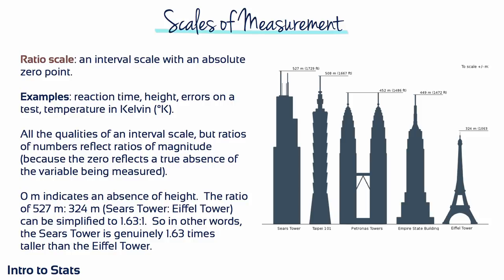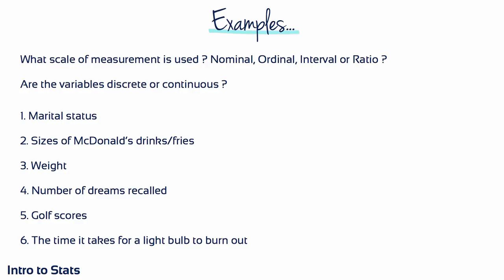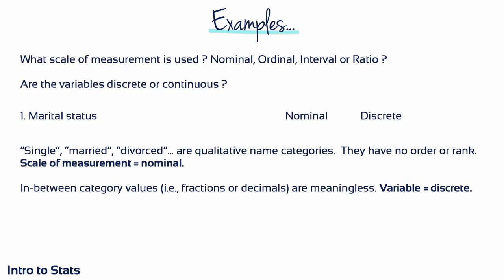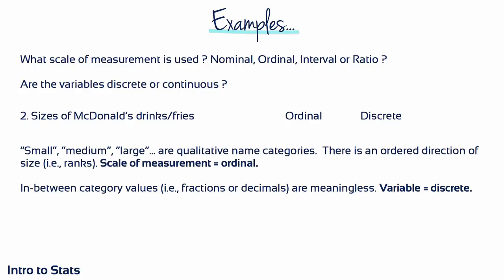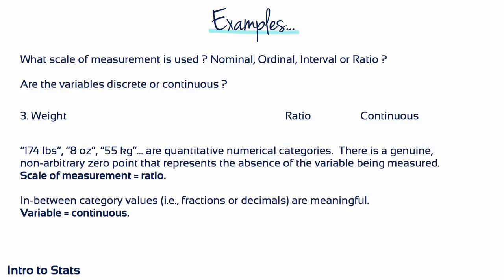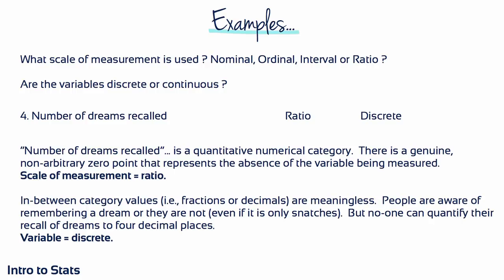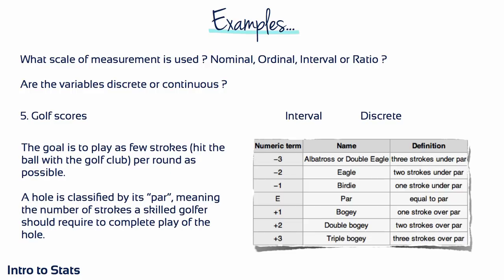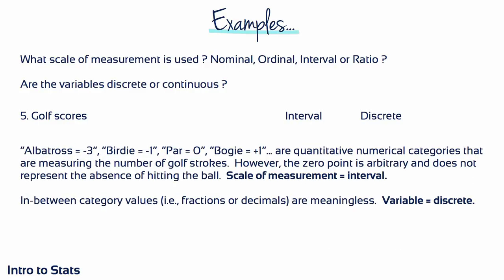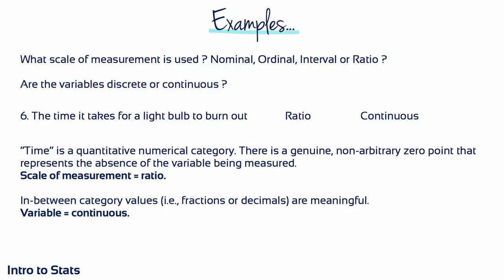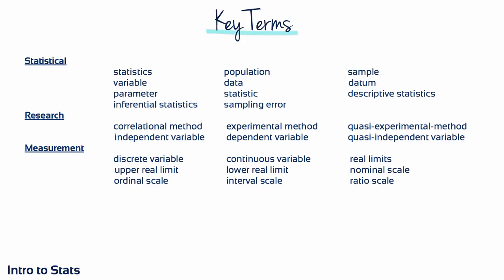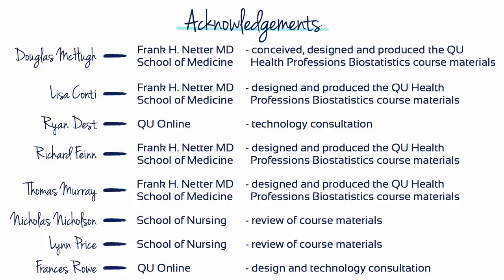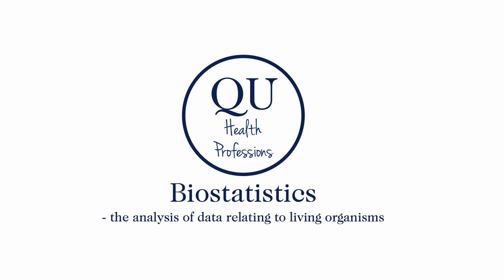For biostatistics, scales of measurement are important because they influence the kind of statistics that can and cannot be used. Let's go through some examples and practice identifying scales of measurement. Marital status is nominal and discrete. The sizes of McDonald's drinks and fries are ordinal and discrete. Weight is ratio and continuous. The number of dreams recalled is ratio and discrete. Golf scores are interval and discrete. The time it takes for a lightbulb to burn out is ratio and continuous.